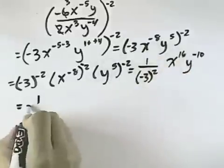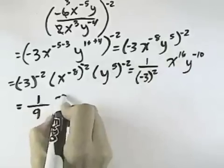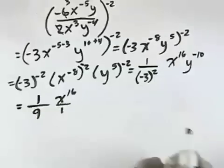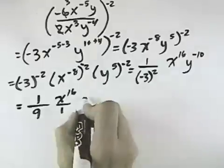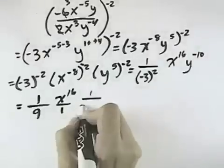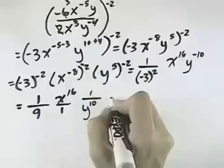So continuing, 1 over, well, a negative 3 squared is 9, then I have x to the 16th, which to make it a fraction I can put it over 1, and then the y to the negative 10th is the same as 1 over y to the positive 10th, to make the exponent positive.